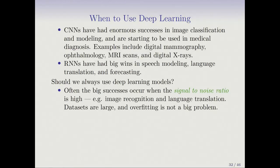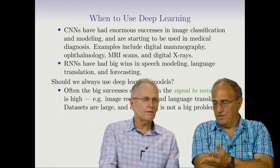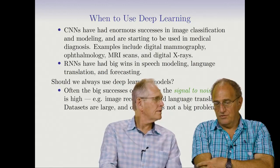Often the big successes occur when the signal-to-noise ratio is high. In image recognition and language translation, humans can classify images almost perfectly — meaning there's a lot of signal and very little noise, and overfitting is not a problem. With human populations, such as trying to predict whether someone will respond to a drug based on their genetic profile, the signal-to-noise ratio is often very low because there's so much noise in human populations.